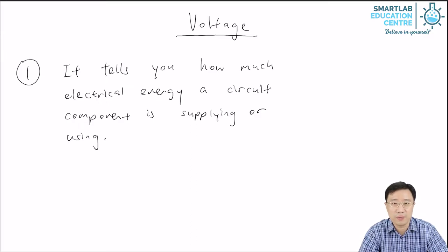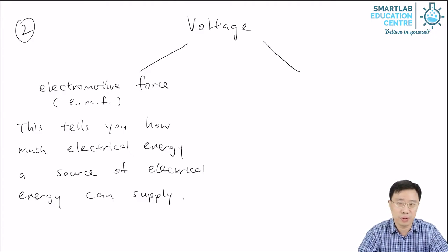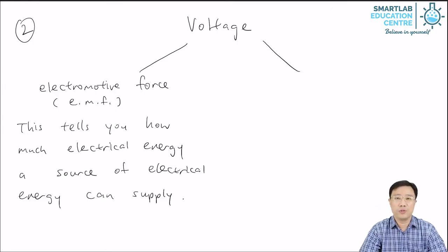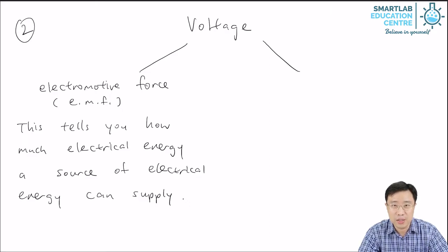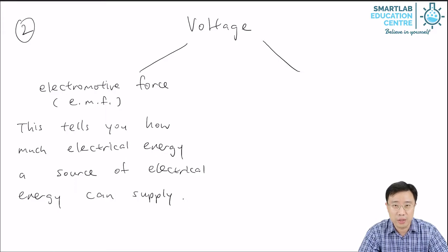Voltage has two types, just like a human is either male or female. The first type of voltage is called the electromotive force. Even though there is the word 'force' in the name, this is not a force. The short form for electromotive force is EMF. This is the voltage of a source of electrical energy — it tells you how much electrical energy this source can supply. The bigger the number, the more it can supply.